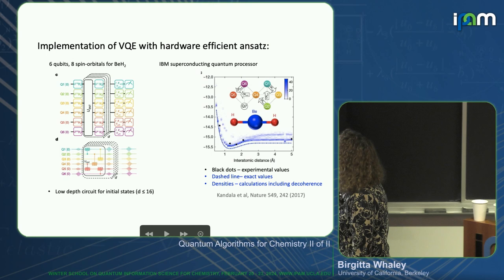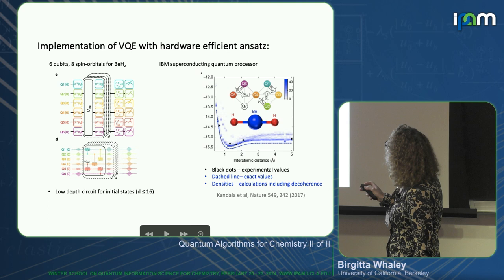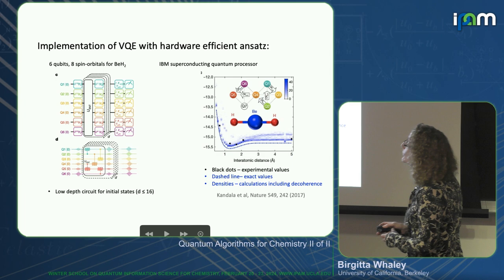This one we talked about before the break — it's from IBM, and it's beryllium hydride, a slightly bigger system. They were getting results from optimization of the hardware-efficient ansatz where they don't put in much chemical information. They actually start with the vacuum state — they don't even start with Hartree-Fock.